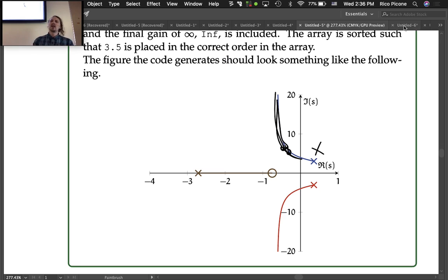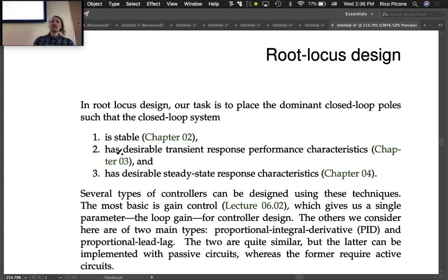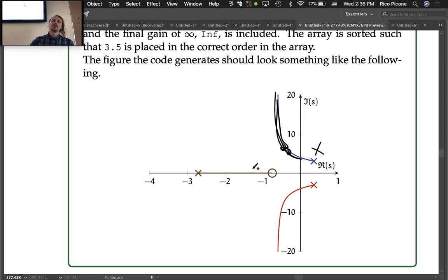But for now we can just say stable or unstable. Then we can get into the other response characteristics. Two, we want the system to have desirable transient response performance characteristics, which we talked about in chapter three. Remember, the transient response performance characteristics have to do with overshoot, rise time, settling time—all that which the R locus in MATLAB helps us to understand using the second order approximation, which we'll be using quite a bit.